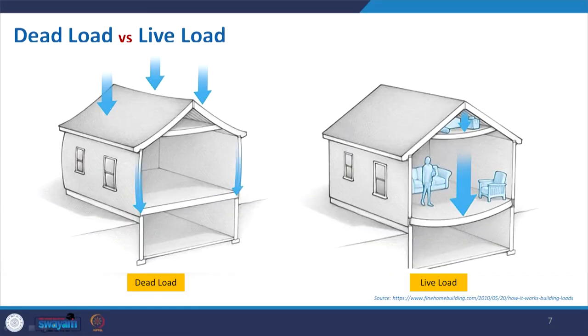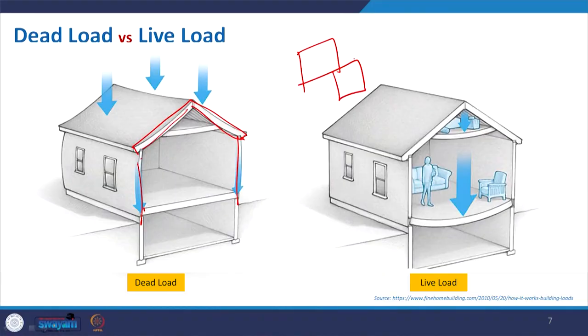So, dead load basically means all structural component loads of a building — material that is not movable. Live load is movable objects like furniture, human beings, and machinery. Both are important in order to design. When we design a building and create those spaces, in order to bring it to reality we have to design the structure, and at that point we have to account for both dead load and live load.